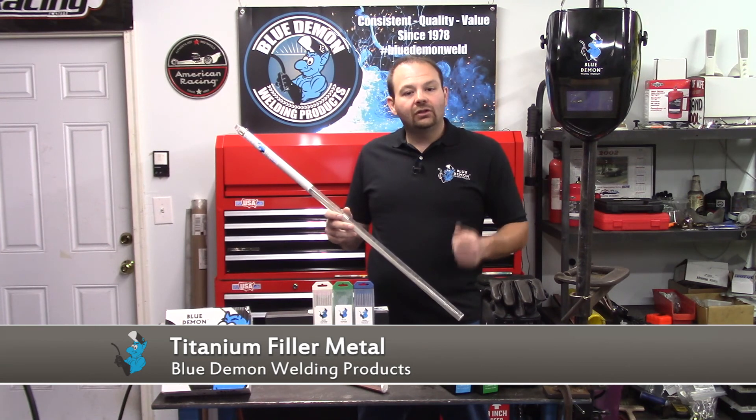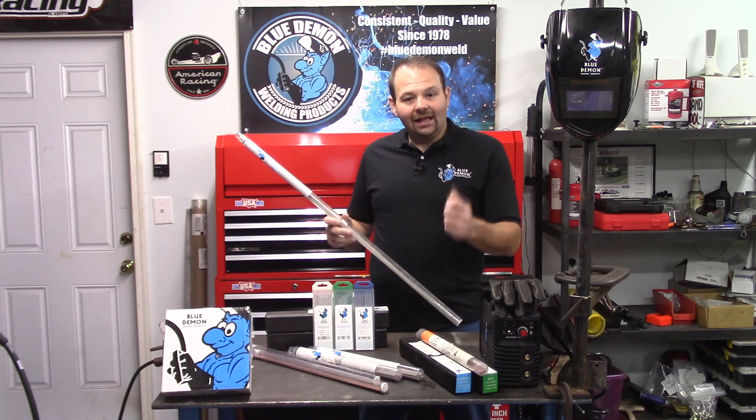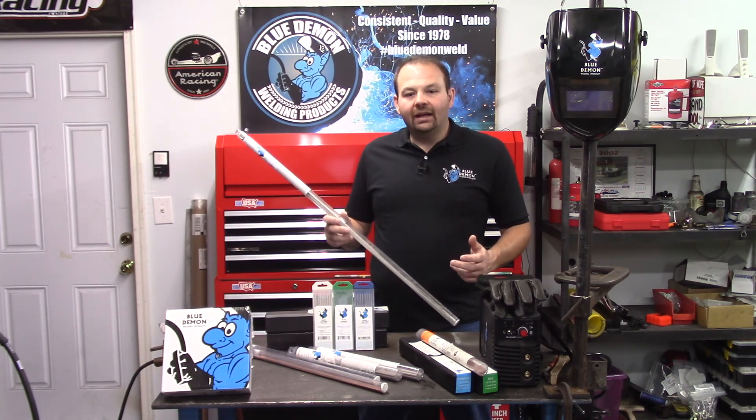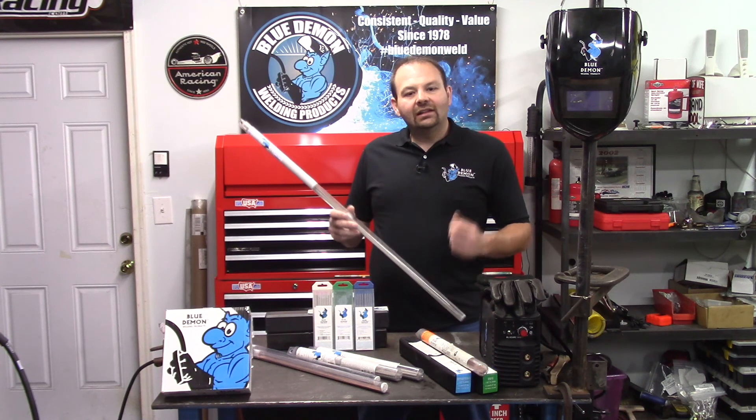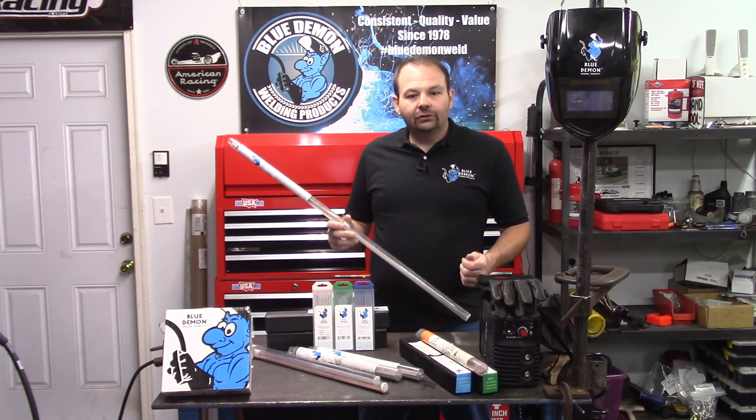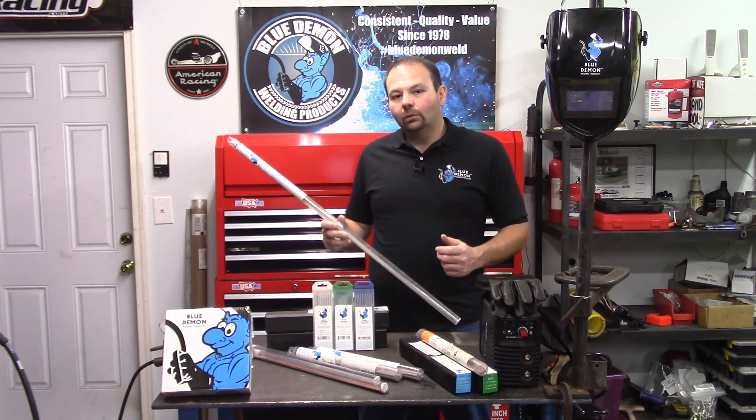ERTI is a titanium filler metal used in the GTAW, GMAW, and SAW processes. One of the first questions you may have about this product: what do the letters and number mean? Filler metals are manufactured into different forms and classified into different categories.